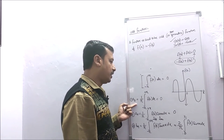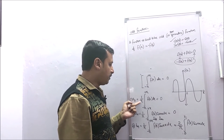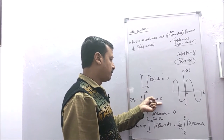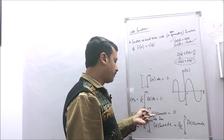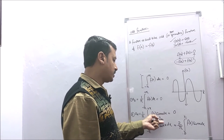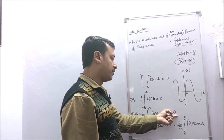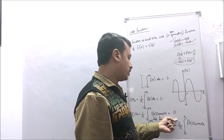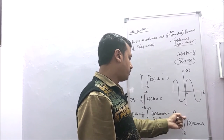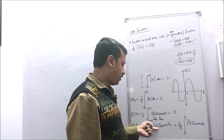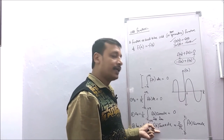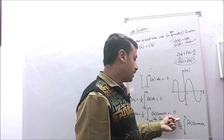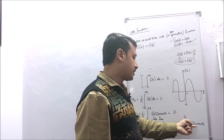For an odd function, a0 = (1/π) ∫ from −π to +π f(x) dx = 0. Similarly, an = (1/π) ∫ from −π to +π f(x) cos(nx) dx = 0, because f(x) is odd and cos(nx) is even, so their product is odd. For bn, since f(x) is odd and sin(nx) is odd, their product is even, so bn = (1/π) ∫ from −π to +π f(x) sin(nx) dx = (2/π) ∫ from 0 to π f(x) sin(nx) dx.